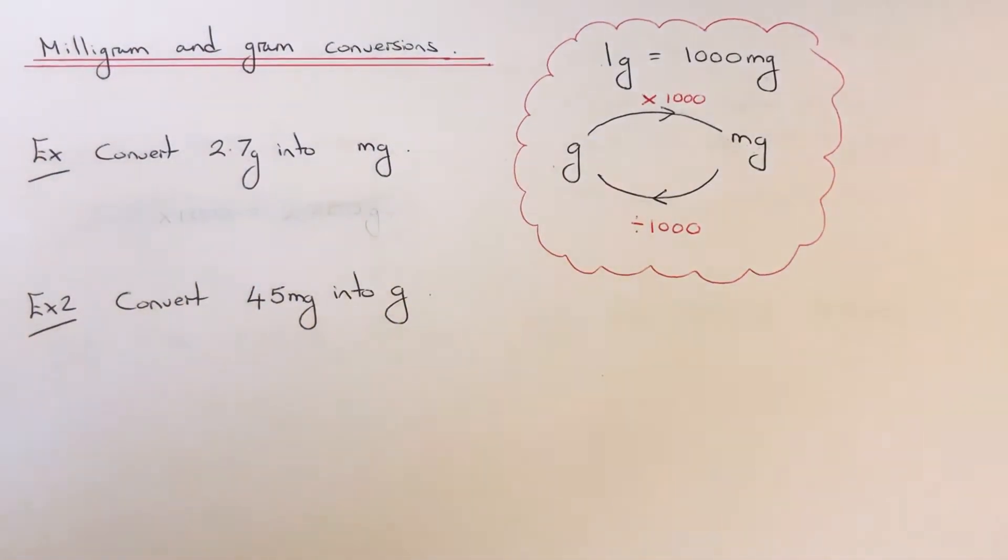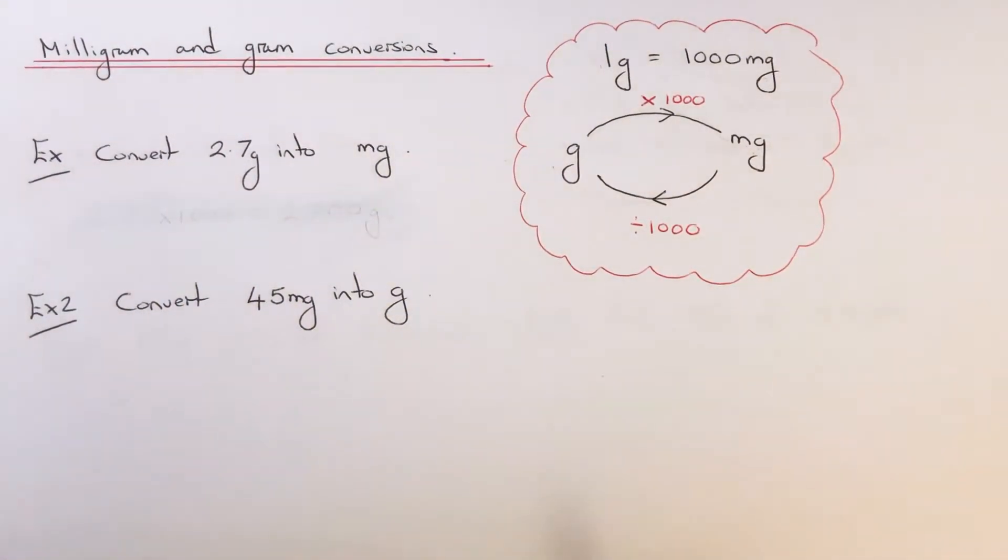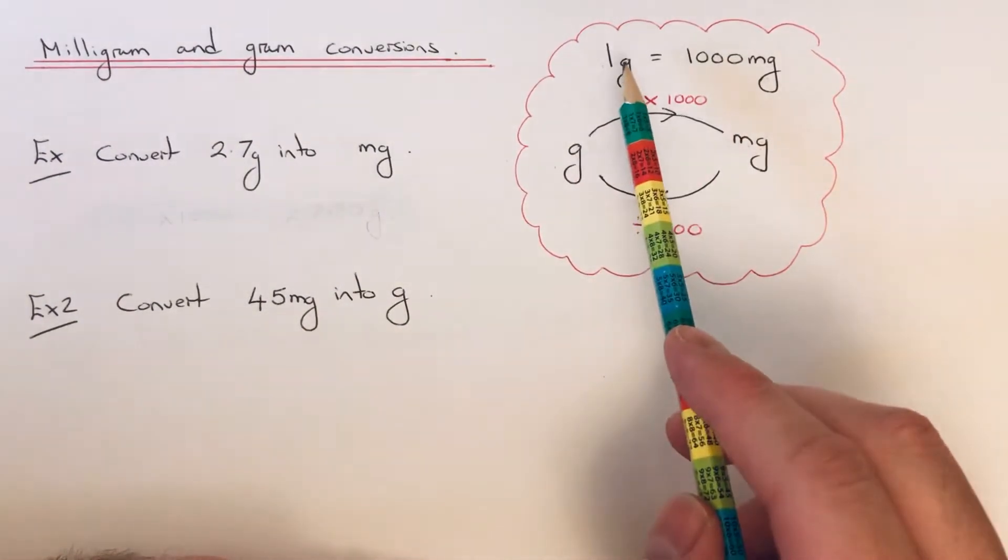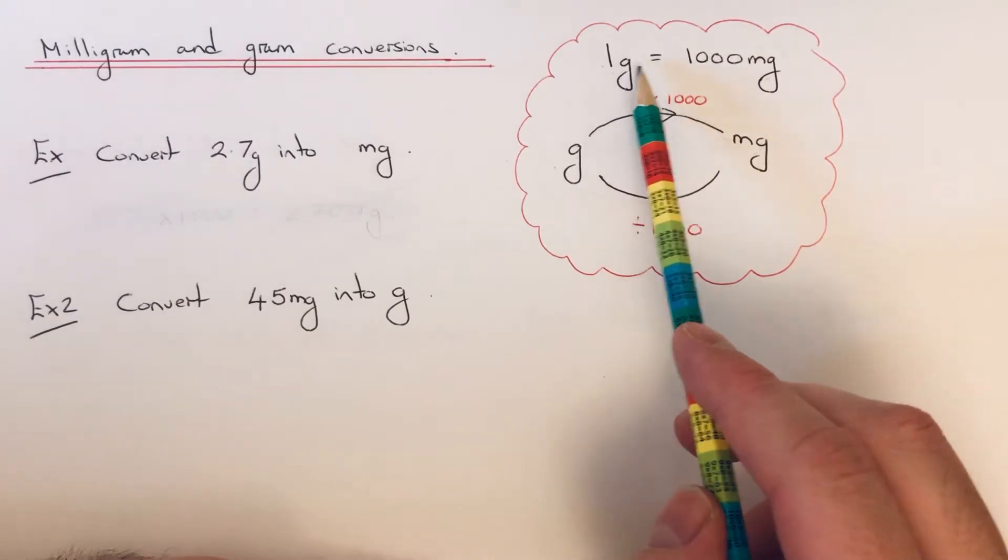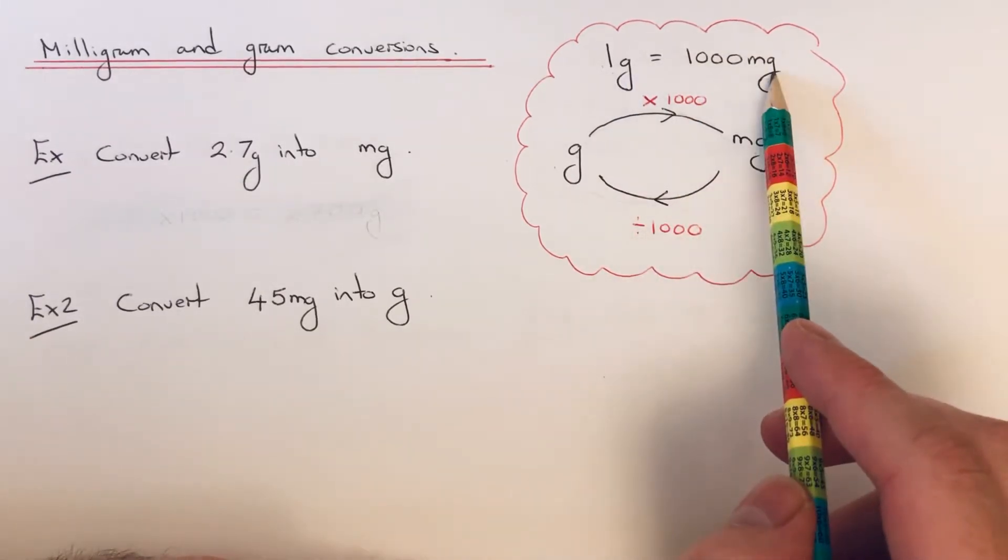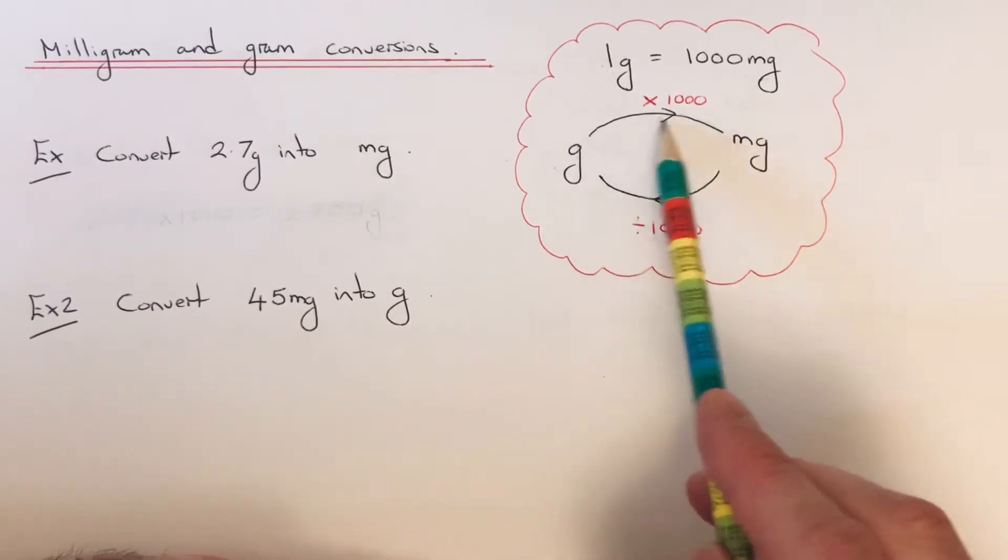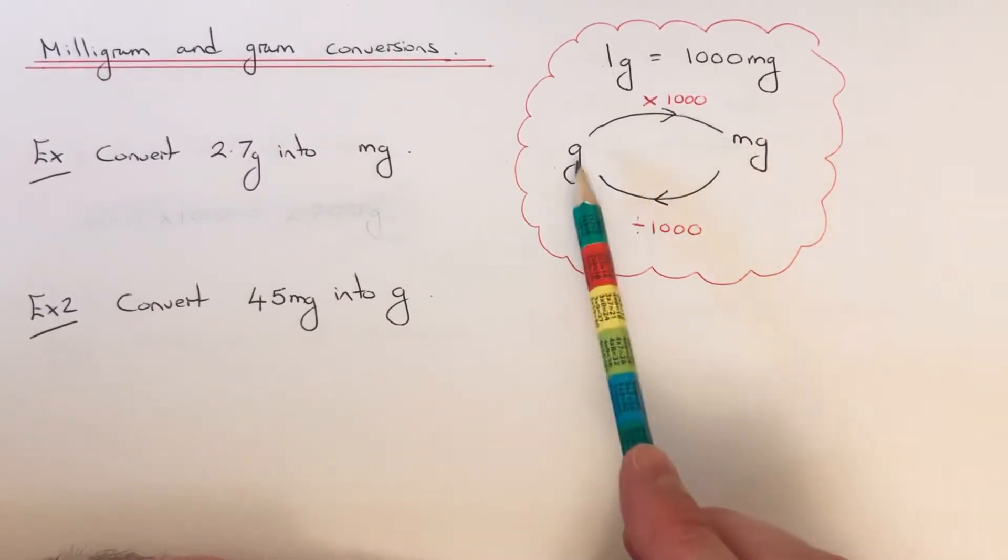Hi guys, welcome back. This is Maths 3000. Today I'm going to show you how to convert between milligrams and grams. To do this, you'll need to know that one gram is equal to a thousand milligrams. Therefore, if you're changing grams to milligrams, you multiply by a thousand, and milligrams into grams, you divide by a thousand.